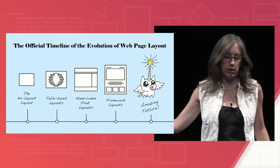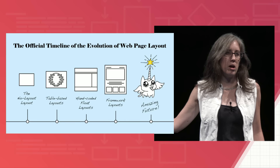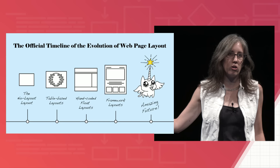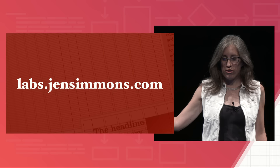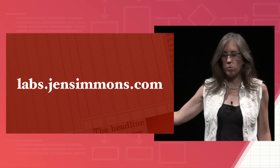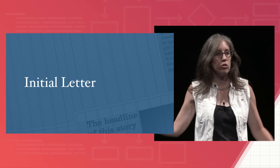There's an amazing future coming. Here's the official timeline: we start with the no-layout layout, then table-based layouts, hand-coded float-based layouts, framework layouts - that's the era we're in. But I think frameworks are about to go away in a big way, and then we're going to have a unicorn kitten flying around bringing us the amazing future. I'm going to show you some examples, all at labs.jensimmons.com. I want to show you a few properties that are not CSS grid but also contribute to what you can do with layout and art direction.